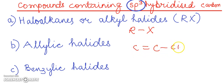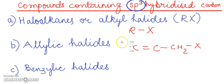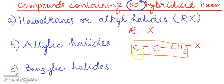This group — the carbon-carbon double bond with the methylene group — is the allylic functional group. So in the allylic halides, the halogen atom is attached to the carbon atom which is adjacent to the carbon-carbon double bond.